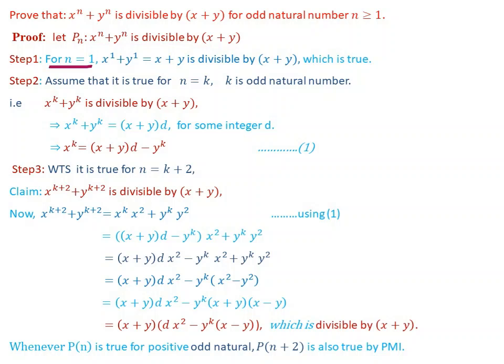x to the power of 1 plus y to the power of 1 equals x plus y, and x plus y is divisible by x plus y, which is true.